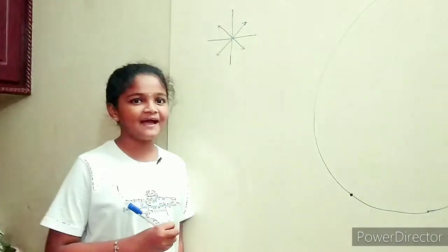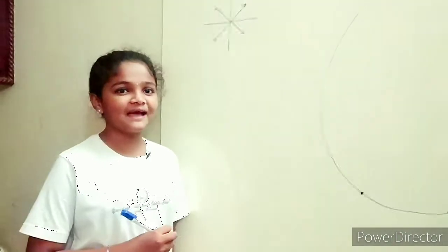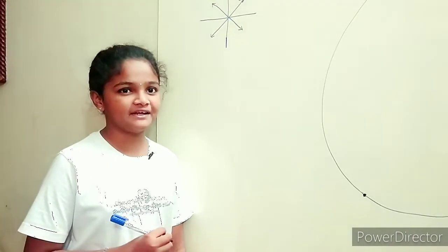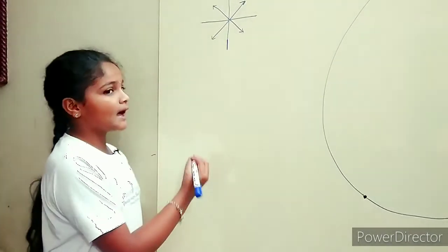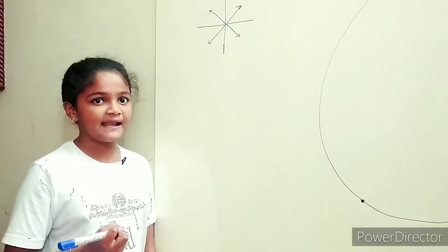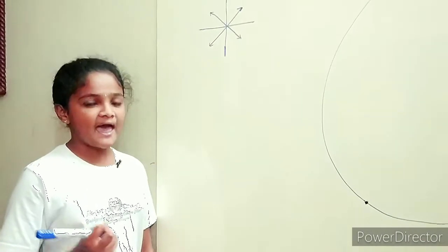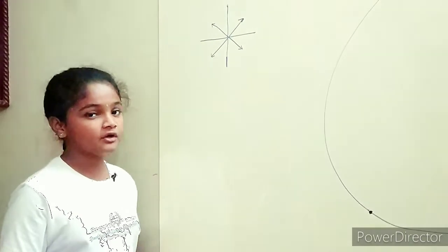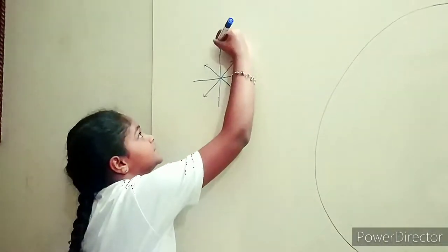Hi everybody, I am Harshita, 60th class, KMG video veteran. Today we will learn about heavy spheres, latitudes, longitudes and their joints. We know about directions: North, South, East, West, North-West, North-East, South-West, South-East.